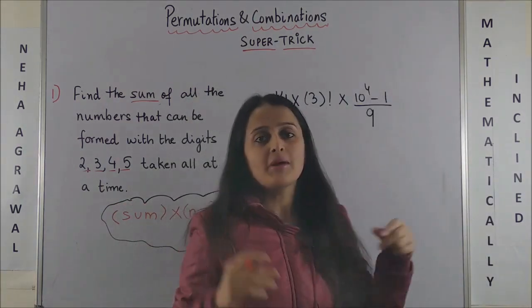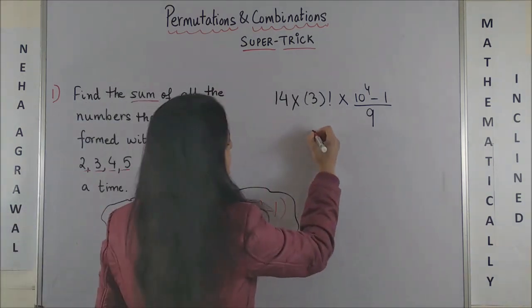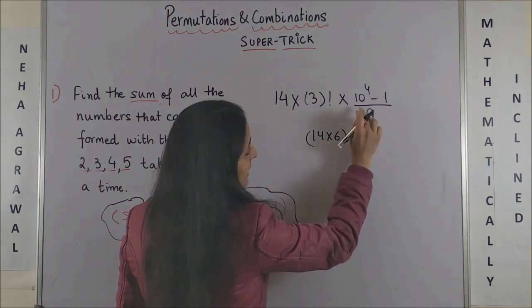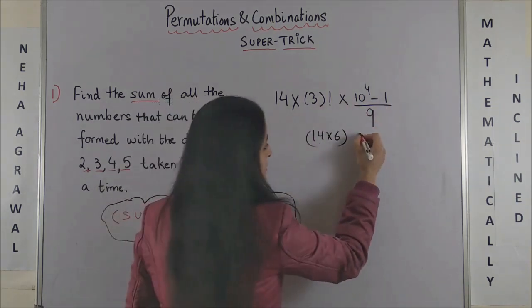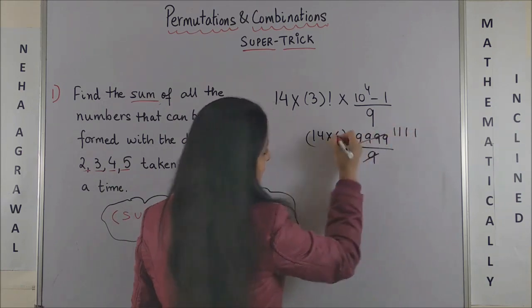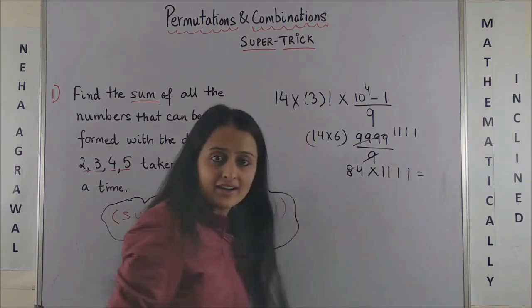At times the options are given in this format, so you can mark the same. If not, you can simplify this. So this will be 14 into 6, 10 raised to power 4 is 10,000 minus 1, so 9,999 upon 9, that simply gives you 1,111. This is 84 into 1,111.